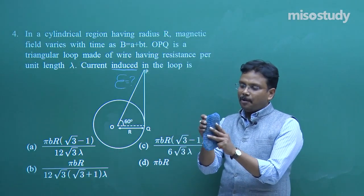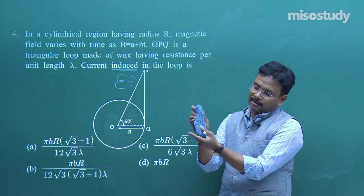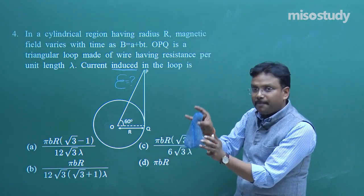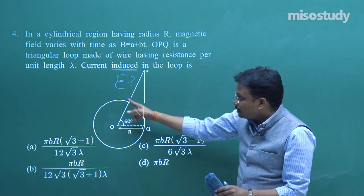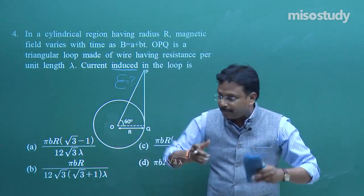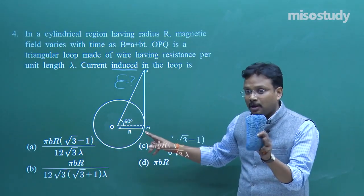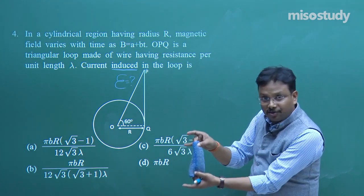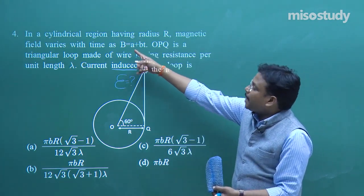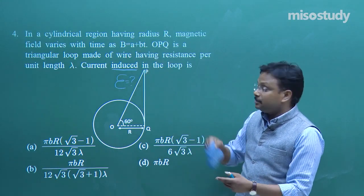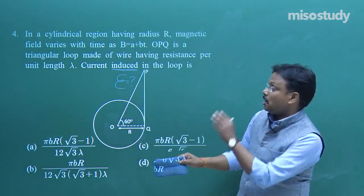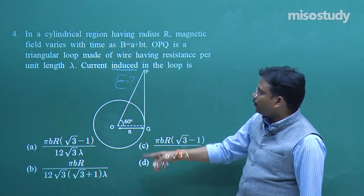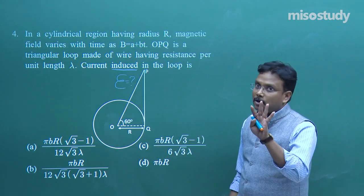The triangular shape loop is placed inside the cylinder, and inside the cylinder the magnetic field is varying. You must calculate the induced EMF, and from that find the induced current. We do not know the exact lengths of the loop sides, so we will use the given angle and Pythagoras' theorem to find the lengths.